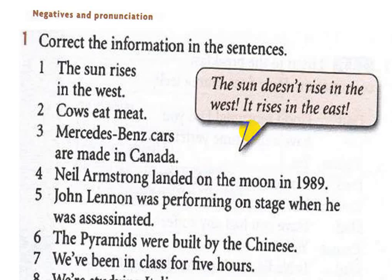First of all, we have negatives and pronunciation — correct the information in the sentences. For example: 'The sun rises in the west.' We make it negative: 'The sun doesn't rise in the west, it rises in the east.'